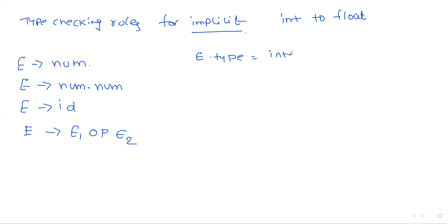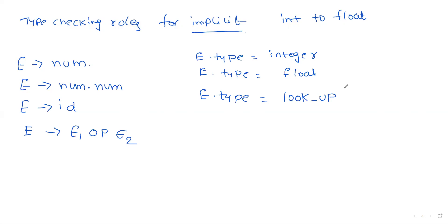For the type checking rules: E.type = integer for one data type. When an id is given, E.type is determined by checking the symbol table using a lookup function. The lookup function checks whether the id is available in the symbol table, and if so, returns the type that is saved in the symbol table.